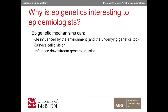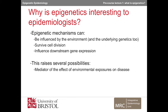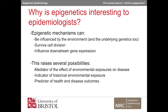Epigenetic mechanisms can be influenced by the environment and have the potential to cause long-lasting changes to gene expression. They're interesting to study because they might, firstly, provide a biological mechanism through which environmental exposures can cause diseases, either soon after the exposure or later in life. Secondly, they might provide a long-lasting indication of a particular exposure, for example to smoking. Thirdly, they might provide a useful tool to diagnose or predict future health and disease outcomes. And fourthly, they might provide potential drug targets to prevent or treat disease. We will discuss these potential applications in more detail on the main course in Bristol.